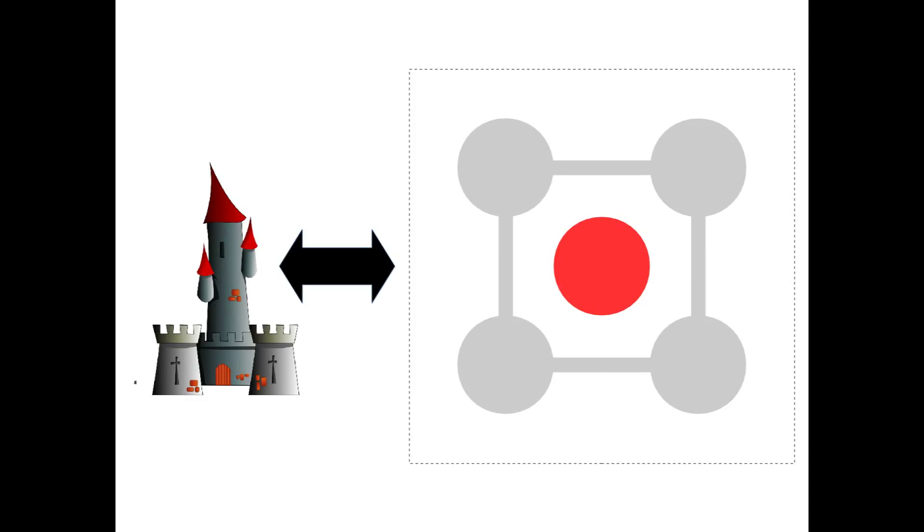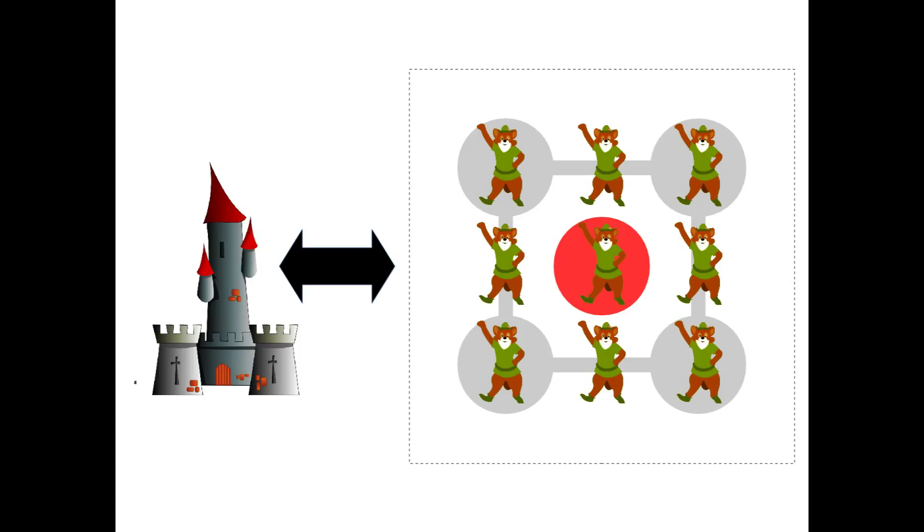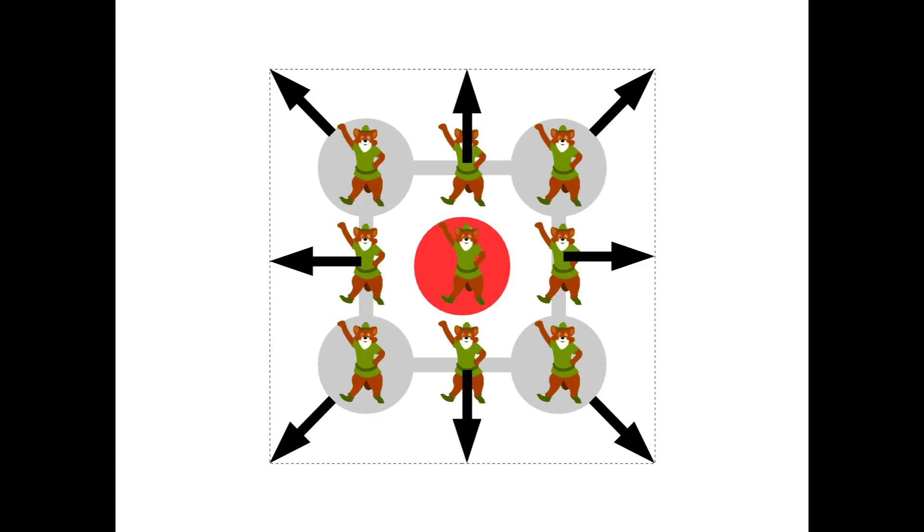Looking from the top onto the castle, the foxes took their strategic positions to defend their home. Eight foxes climbed the castle wall, and one fox stayed in the courtyard to distribute arrows to his mates.